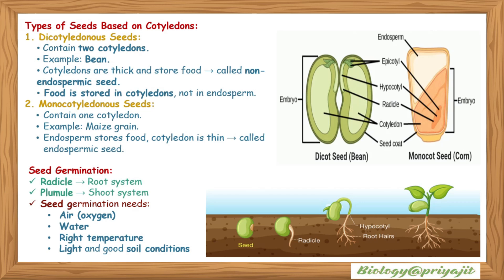In dicot seeds, cotyledons are thick and store food — called non-endospermic seeds, as food is stored in the cotyledon, not in the endosperm. Monocot seeds contain one cotyledon — example: maize grain — where the endosperm stores food and the cotyledon is thin; these are called endospermic seeds. Seed germination requires air (oxygen), water, proper temperature, light, and good soil conditions.